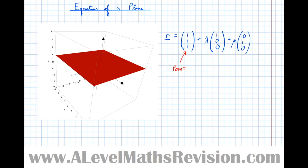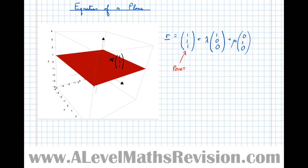First, (1, 1, 1) is a point on the plane. Let's mark that point: x-coordinate 1, y-coordinate 1, and z-coordinate 1. So the point (1, 1, 1) is roughly there on the plane. I'll label it — there's point (1, 1, 1).